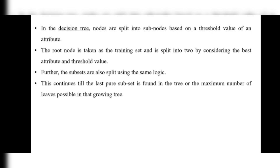The root node is taken as the training dataset and is split into two by considering the best attribute and threshold value. Further, those subsets are also split using the same logic — highest data on the right, low on the left. This continues until the last pure subset is found or the maximum number of leaves is reached in the growing tree.